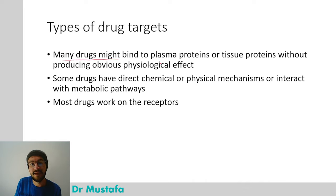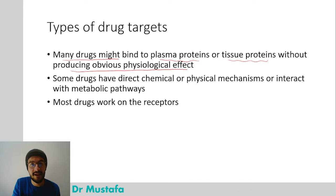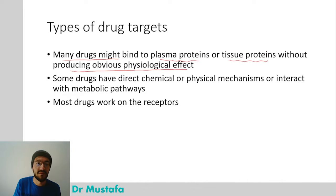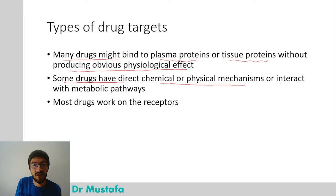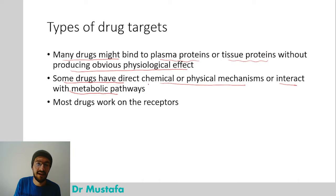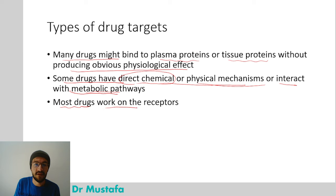Many drugs may bind to plasma proteins or tissue proteins without producing obvious physiological effects — they would have no effect whatsoever. Some drugs have direct chemical or physical mechanisms or interact with metabolic pathways. But if a drug does not have one of the four target types, it might work through those mechanisms. Most drugs, however, as we shall see, work on receptors.